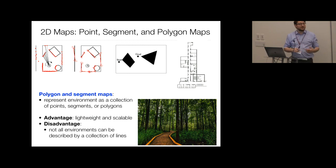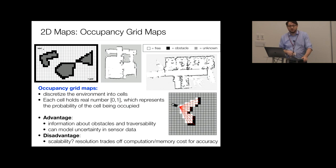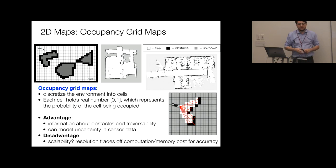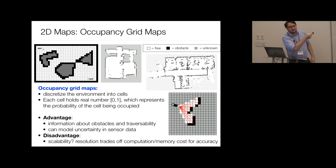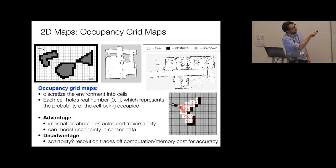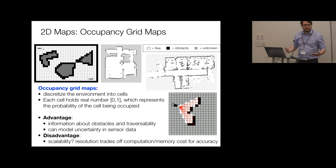Probably the most popular 2D map representation in robotics is the occupancy grid map. An occupancy grid discretizes the environment into cells, viewed from the top. Each cell is assigned a probability of being occupied: probability 0 means free (shown in white), probability 1 means obstacle (shown in black), and probability around 0.5 means unknown.